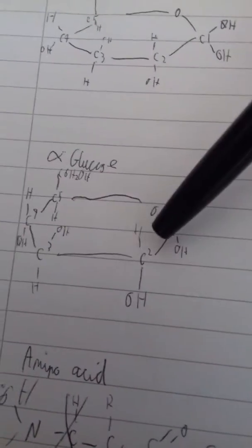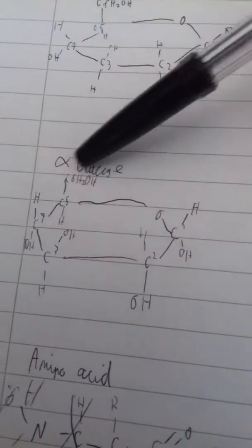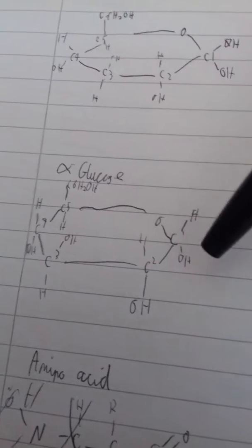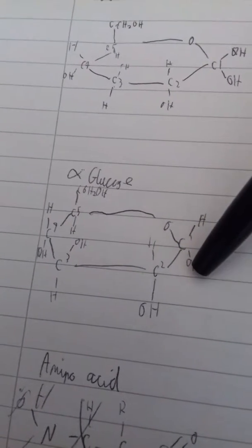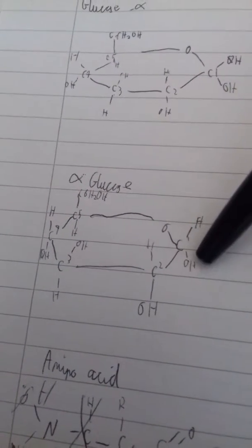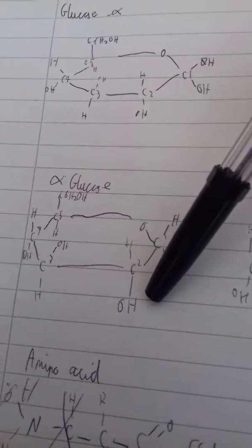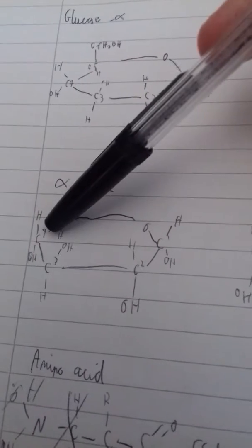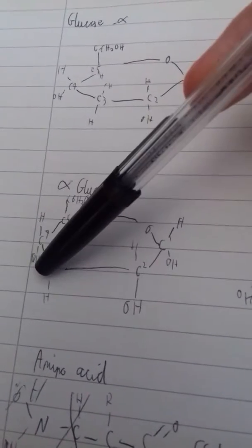Alpha glucose has six carbons in a ring structure with an oxygen. The first carbon has the alcohol group at the bottom, so the OH is at the bottom. The second carbon also has the OH at the bottom. The third carbon has the OH at the top, and the fourth carbon has it at the bottom.